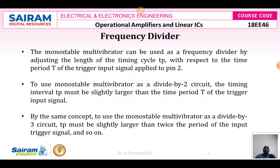The monostable multivibrator can be used as a frequency divider. How it can be used as a frequency divider is: we can adjust the timing cycle, that is the time period of your output waveform, which is going to be varied with respect to the trigger input signal applied to pin number 2. The timing interval TP, that is the output time period, must be slightly larger than the time period of the trigger input signal.